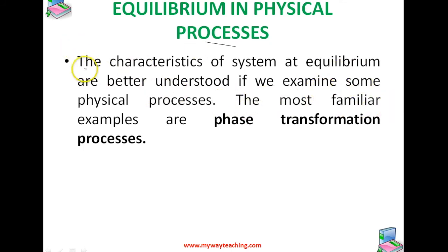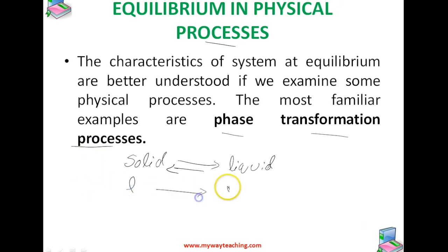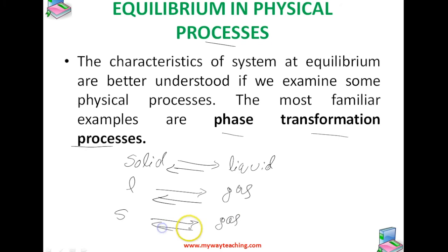Now let's come to the topic equilibrium in physical processes. The characteristics of a system at equilibrium are better understood if we examine some physical processes. The most familiar examples are phase transformation processes — from solid to liquid, liquid to gas, gas to liquid, solid to gas, or gas to solid. This is equilibrium in physical processes.